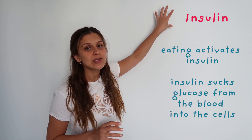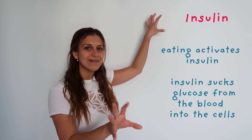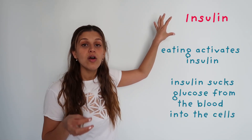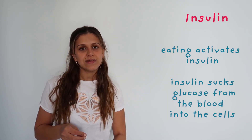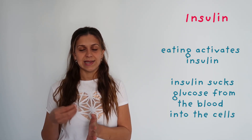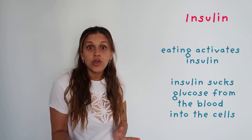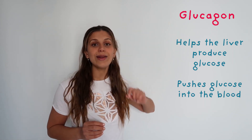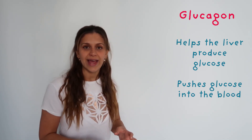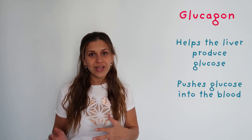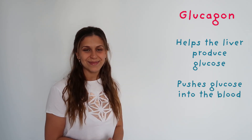You might wonder why one works against the other. Well, when you eat, that is when insulin is activated — it takes the sugar from the food and pushes it into the cells. But when you are not eating, when you're starving, your body still has to function. That is when glucagon takes action and pushes the sugar back into the bloodstream.